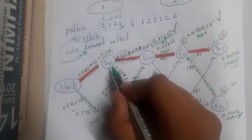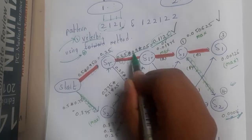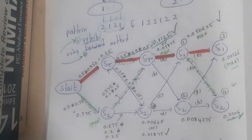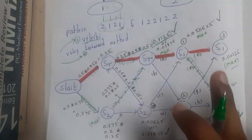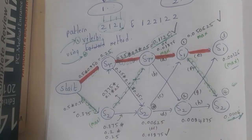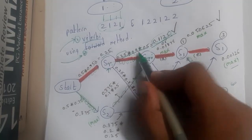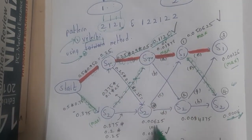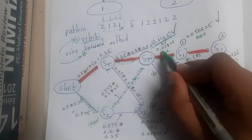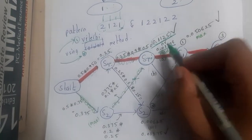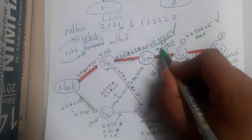The formula is: the value the node is holding, multiplied by the transition probability, multiplied by the emission probability at the destination. For example, 0.25 × 1 × 0.25 gives that value. Keep solving in this way. At some point you will have two values at a node - for example 0.1125 and 0.01875 - and you select the maximum one, omitting the other.